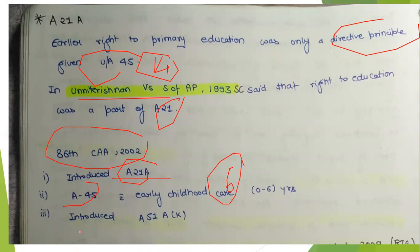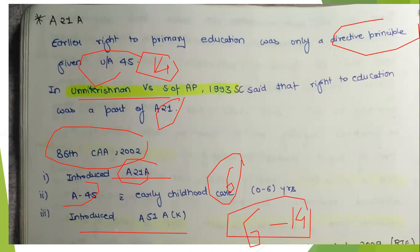The third thing introduced by the 86th Amendment was Article 51A, clause (k), which introduced the 11th fundamental duty — to make available opportunities for education to their children in the age group of 6 to 14 years. So directive principles, the state, and the fundamental duty for parents and guardians were all addressed.